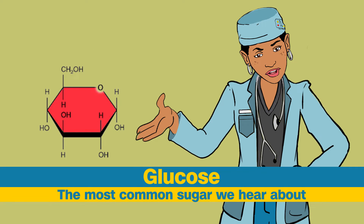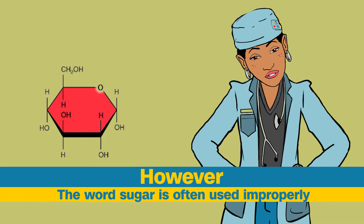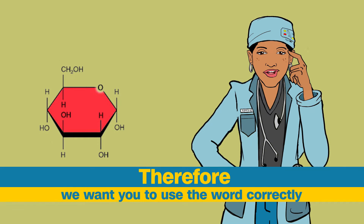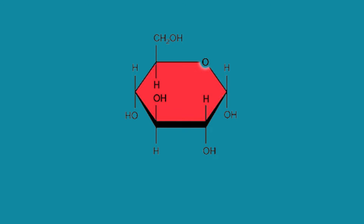Glucose is the most common sugar we hear about. However, the word 'sugar' is often used improperly to refer to all types of carbohydrates. Therefore, we want you to use this word correctly. In the RMD clinic, we specify the type of carbohydrate we are referring to.